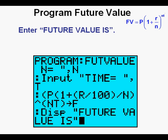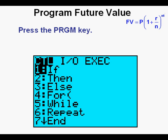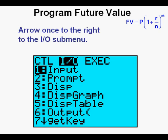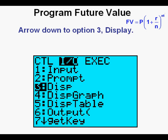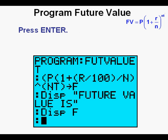Enter the letter F by pressing the alpha key then the cosine key with the green F above it. Enter the text FUTURE VALUE IS inside quotation marks. Press enter. Press the program key, arrow once to the right to the input/output submenu, arrow down to option number 3, display. Press enter. Enter the letter F by pressing the alpha key, then the cosine key with the green F above it. Press enter. Congratulations on writing your future value program.